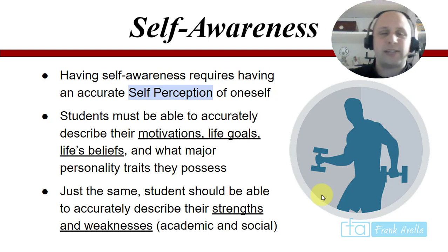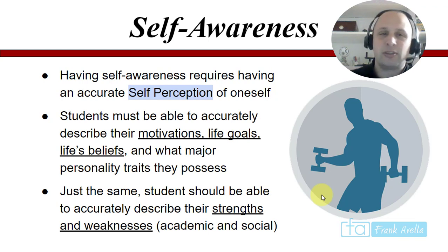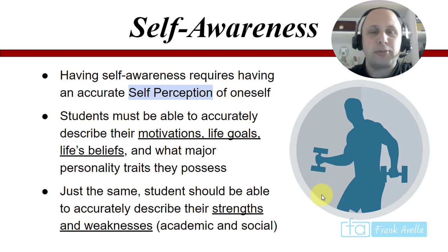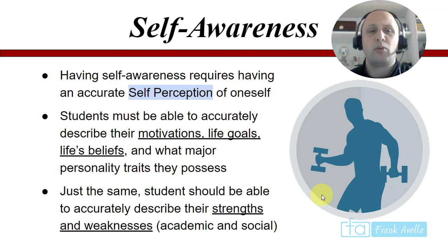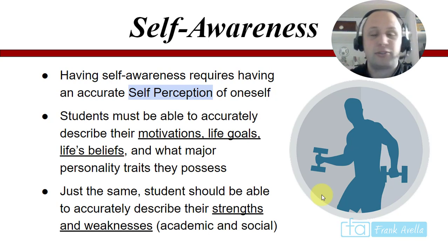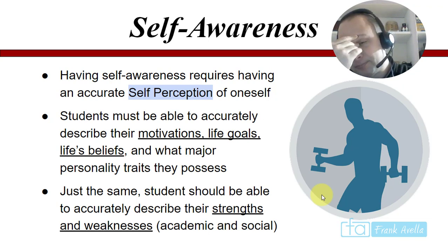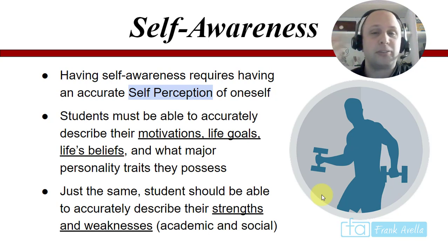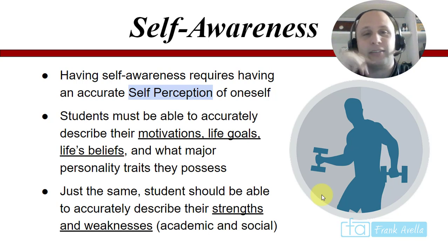Having self-awareness requires having an accurate self-perception of oneself. Students must be able to accurately describe their motivations, life goals, life beliefs, and major personality traits. Students should also accurately describe their strengths and weaknesses. As a basketball coach, I've had players who think they're the greatest and are heading to the NBA — but that's not an accurate self-perception.